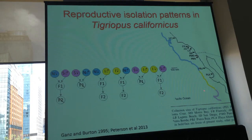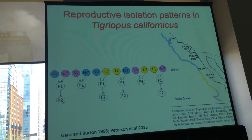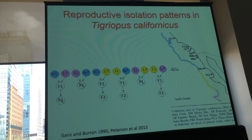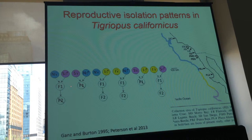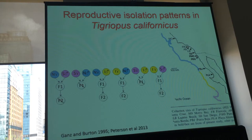There is a southern clade in Baja, an intermediate clade, and a northern clade from California all the way to Alaska. If you cross these different clades you get different patterns of reproductive isolation. What matters here is not the sex of the F1 hybrid, but the direction of the cross. If you cross the northern clade with the southern clade in one direction, hybrids are sterile; in the other direction, hybrids are inviable — both males and females. Southern and intermediate: in one direction hybrids are inviable, in the other direction they're fine and you can get F2 and F3 hybrids.